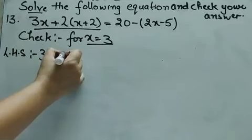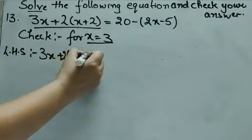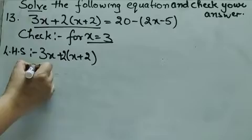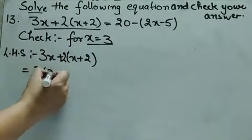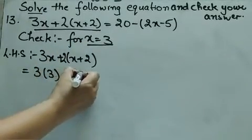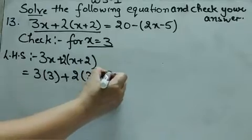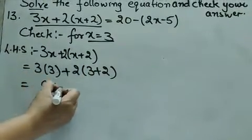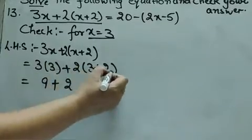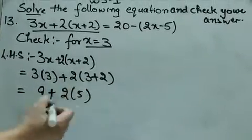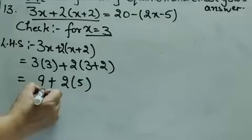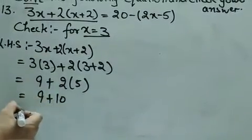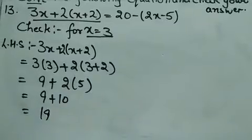Left hand side is 3x plus 2 into (x plus 2). जहाँ x है, वहाँ 3 put करेंगे: 3 into 3 plus 2 into (3 plus 2). This equals 9 plus 2 into 5. In the bracket it is 5. So 9 plus 10 equal to 19.